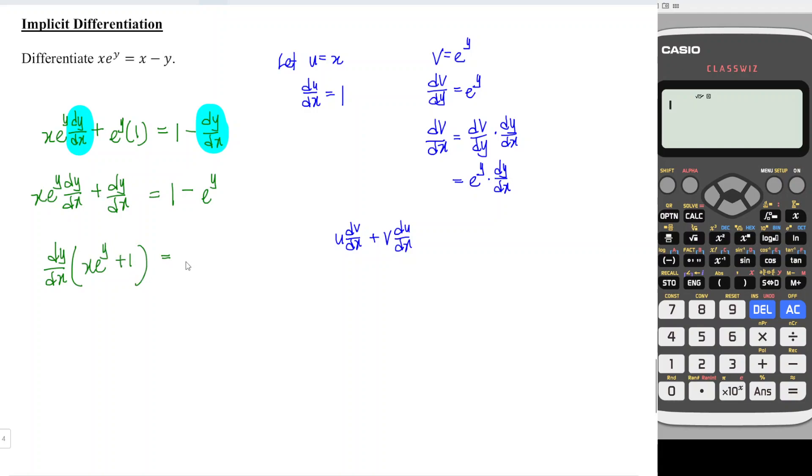Plus 1 is equal to 1 minus e^y. So which means that dy/dx is equal to 1 minus e to the power y over 1 plus xe to the power y, and we're done. That's all for this video, thanks for watching, hope you like this, see you.